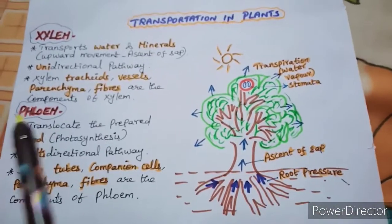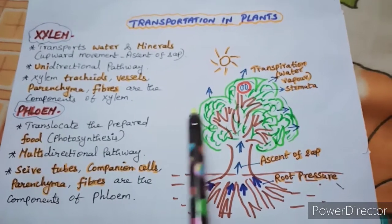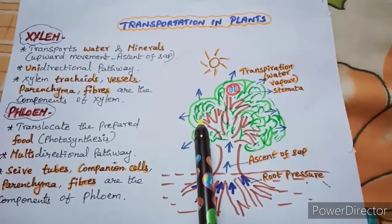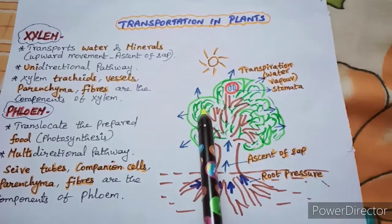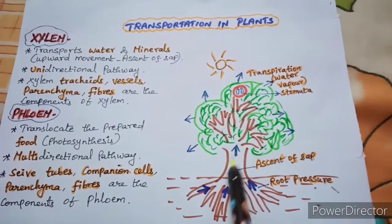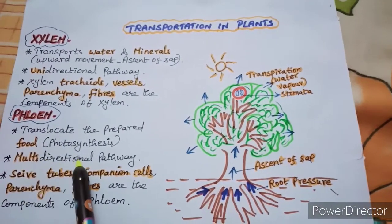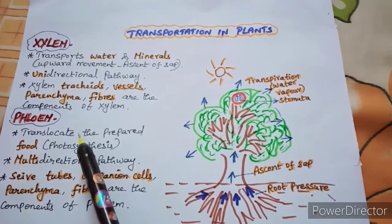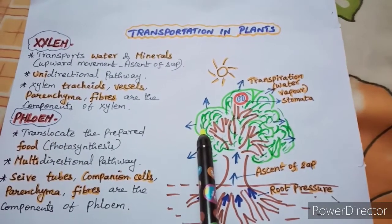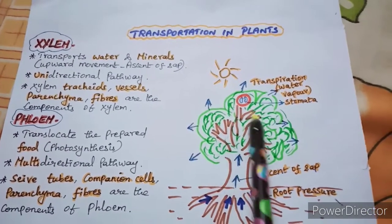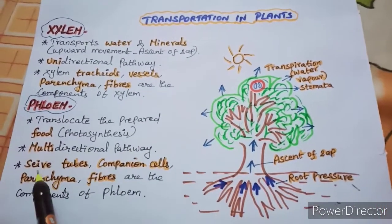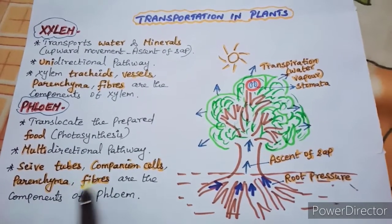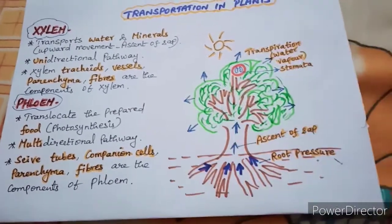Coming to phloem, it translocates the prepared food. Food gets prepared in the leaf because of the presence of chlorophyll and in the presence of sunlight, so plants are said to be autotrophs. From the leaf, food should be transported to different parts of the body — this is a multidirectional pathway. The process is called translocation. The components of phloem are sieve tubes, companion cells, phloem parenchyma, and phloem fibers — these four components are involved in the process of translocation.